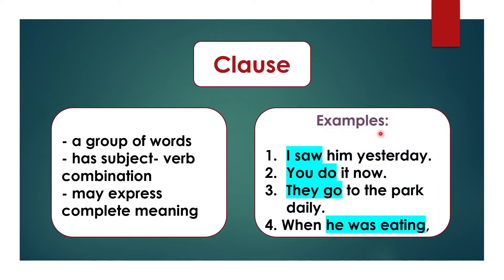Let me give you examples. 'I saw him yesterday' — here 'I' is the subject and 'saw' is the verb, the past form of 'see.' This sentence gives a complete meaning with a subject-verb combination and is a group of words, so obviously this is a clause. 'You do it now' — 'you' is the subject and 'do' is the verb; it is a complete sentence expressing complete meaning, so this is a clause. 'They go to the park daily' — again expressing complete meaning with subject 'they' and verb 'go,' so this is a clause.